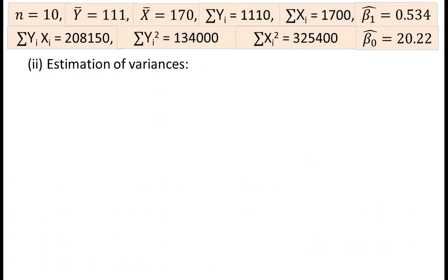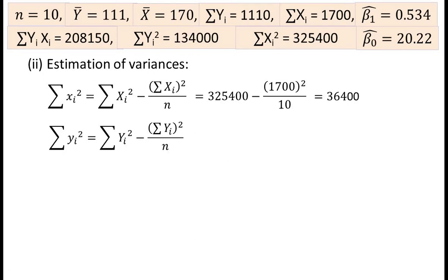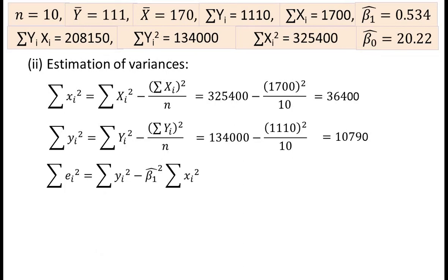Estimation of variances. Summation of small xi² equals summation of (Xi − x̄)², which is summation Xi² minus (summation Xi)²/n. Summation Xi² is 36400. Summation small yi² equals summation Yi² minus (summation Yi)²/n, and we get the value 10790. Summation ei² equals summation small yi² minus (β₁ cap)² times summation small xi², and the value is 410.32.